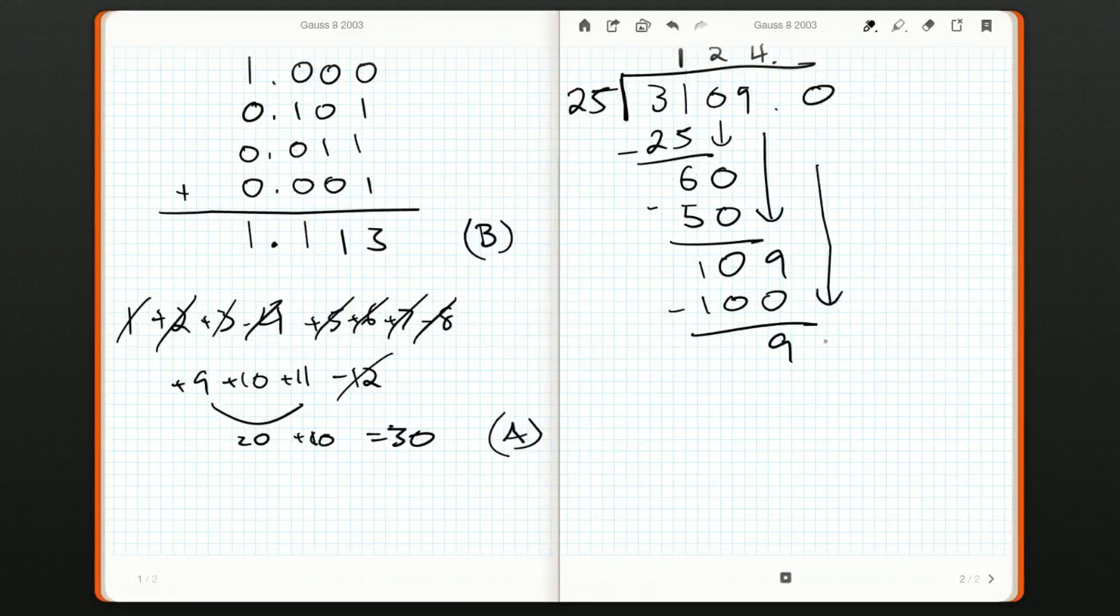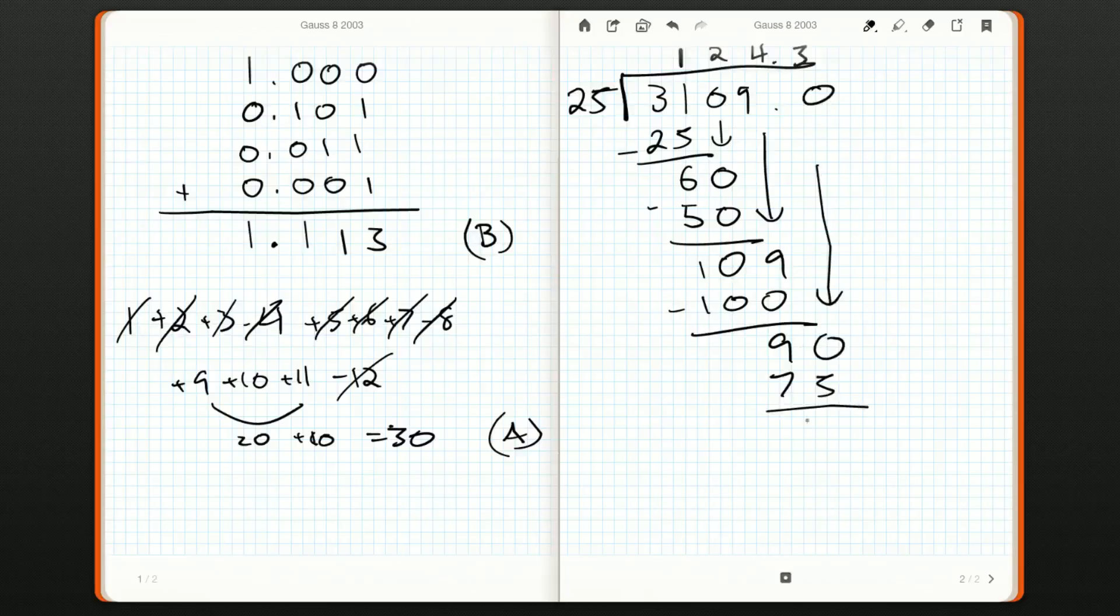We bring down the zero. How many times does 25 go into 90? The best we can get is 75. So that's 3 times. And that leaves us with 15 here. And then we take another zero. Bring it down. And 150. Well, 50 goes into 153 times. 25 goes into 50 twice. So we're going to get a six here. And that is going to be an even division.